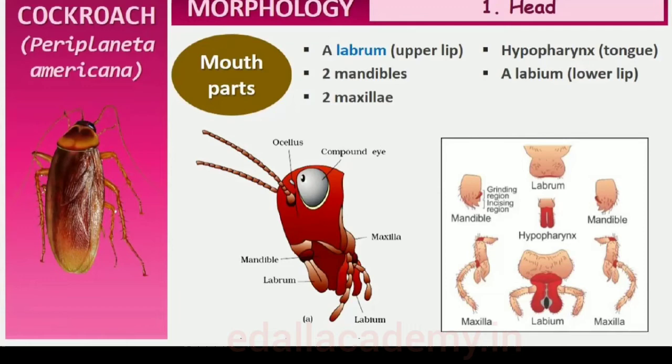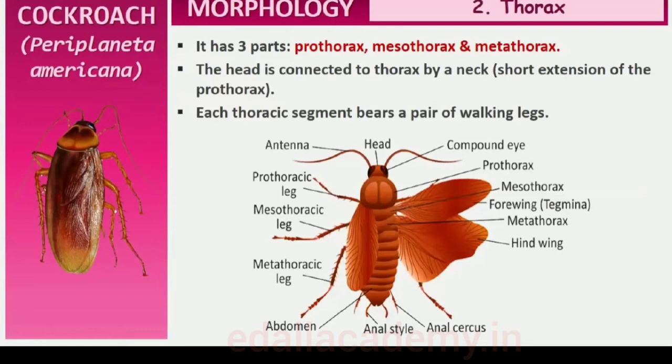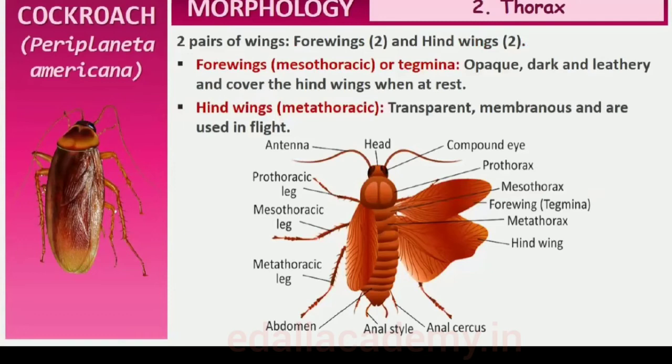The thorax consists of three parts: prothorax, mesothorax and metathorax. The head is connected with the thorax by a short extension of the prothorax known as the neck. Each thoracic segment bears a pair of walking legs. The first pair of wings arises from the mesothorax and the second pair from the metathorax. The forewings, or mesothoracic wings called tegmina, are opaque, dark and leathery and cover the hind wings when at rest. The hind wings are transparent, membranous and are used in flight.